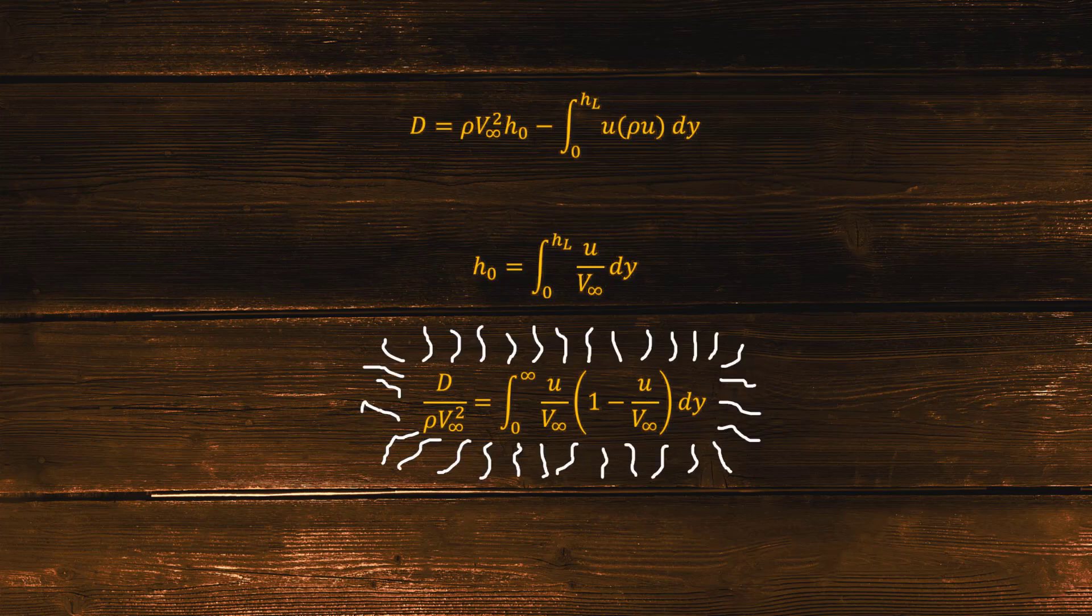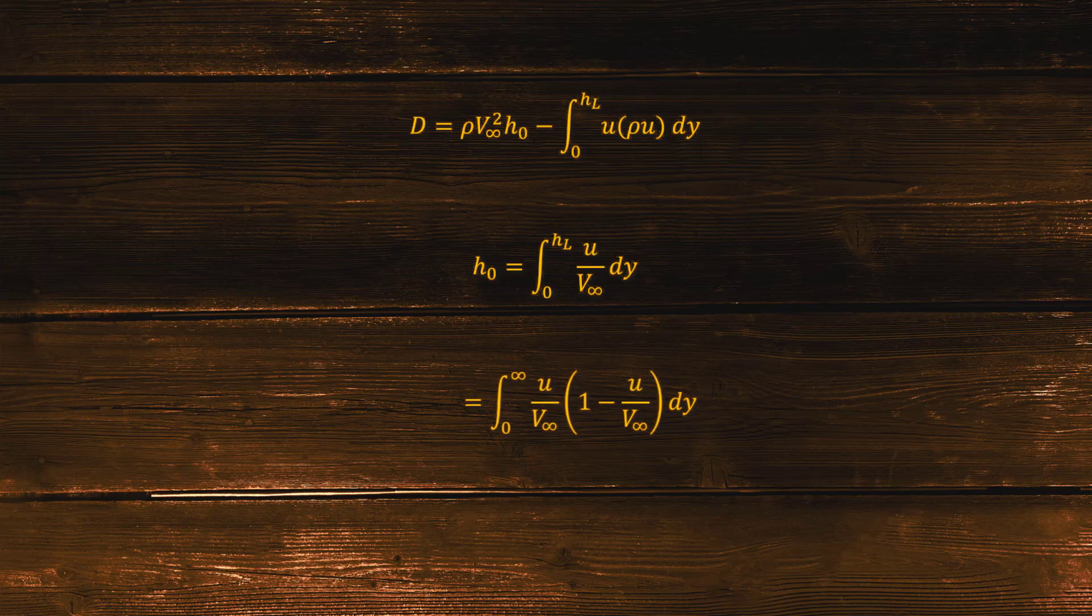The integral term is defined as the momentum thickness that represents the loss of momentum due to the presence of the boundary layer, as compared to an equivalent inviscid flow. The definition of momentum thickness holds for any incompressible boundary layer, laminar or turbulent.